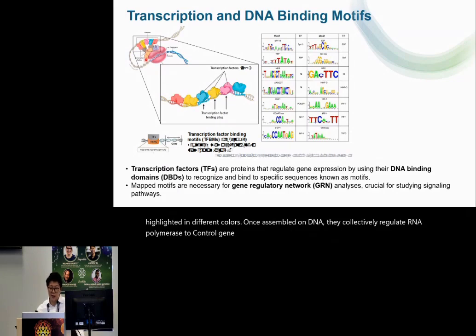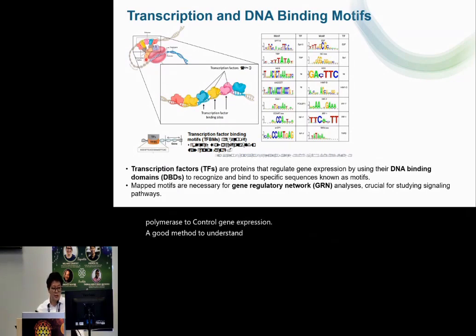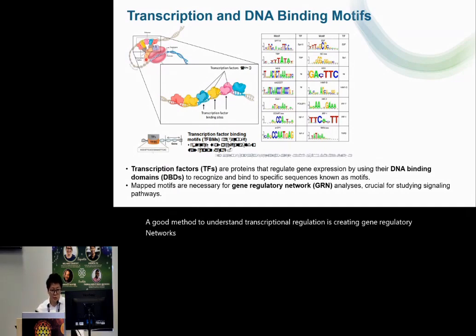A good method to understand transcriptional regulation is creating gene regulatory networks. But in order to do so, it requires well-mapped motifs for every single TF.